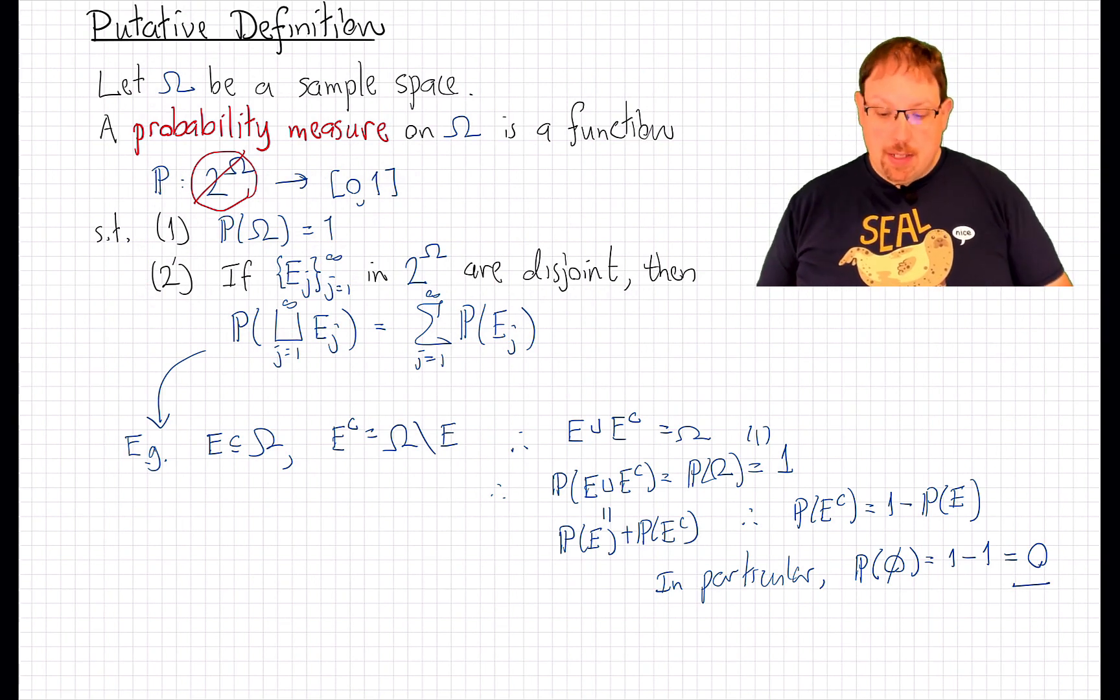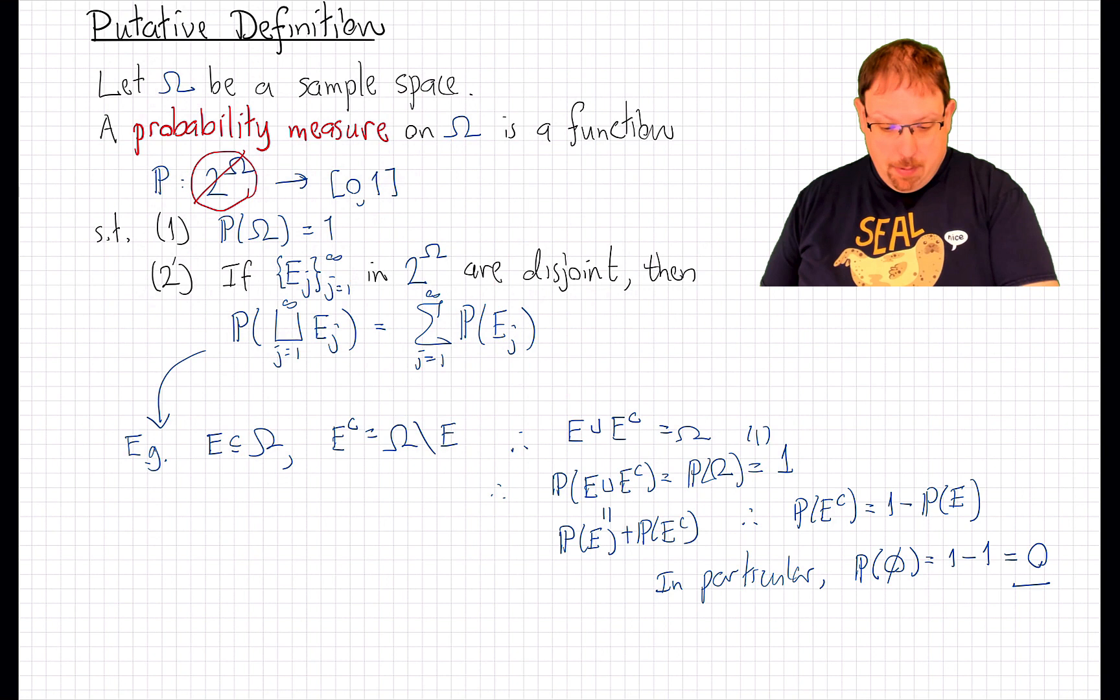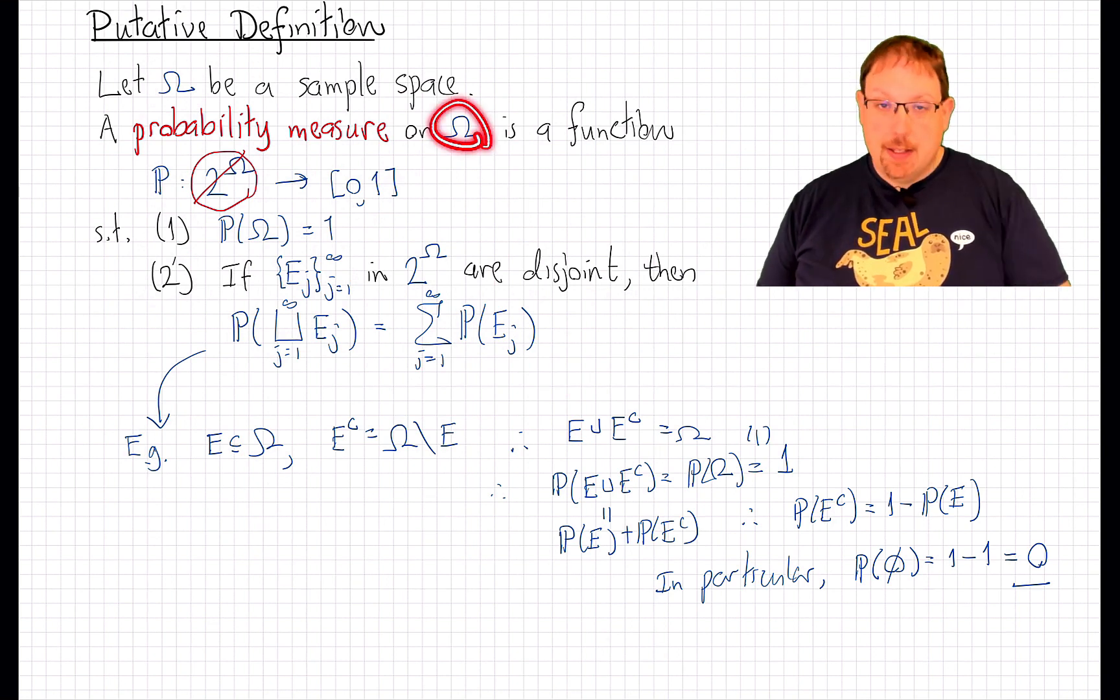Now, the reason I included this calculation here is to tell us that whatever our reduced set of events should be, it better be closed under the kinds of operations that we're doing here. It had better contain the sample space.